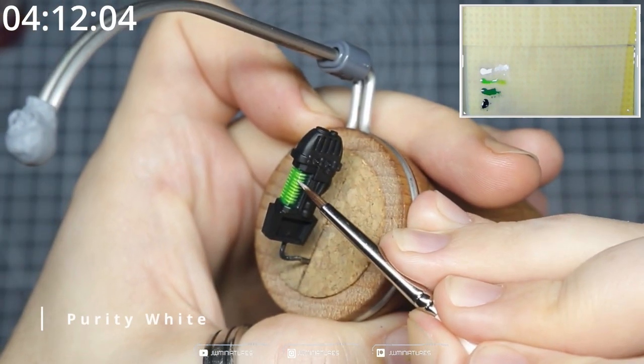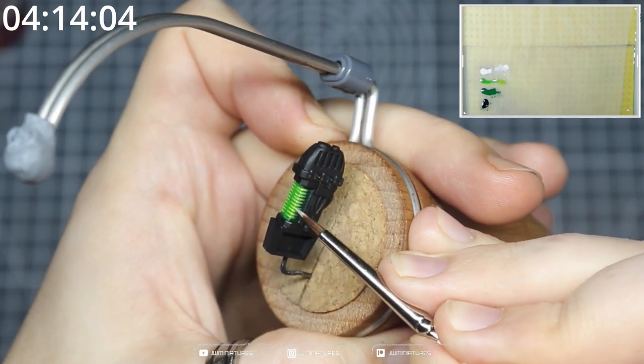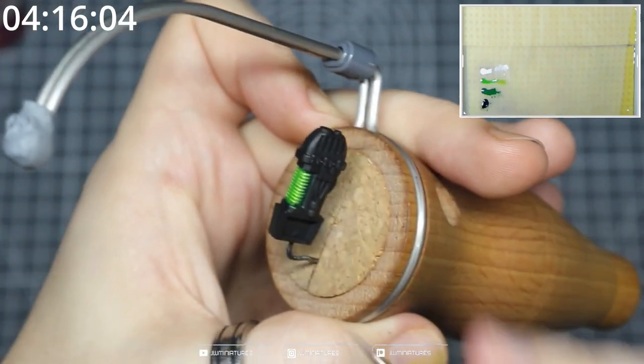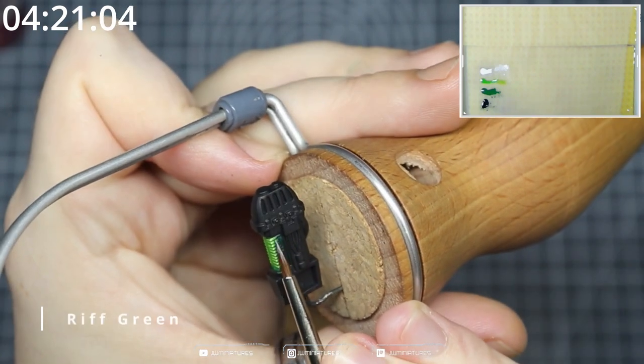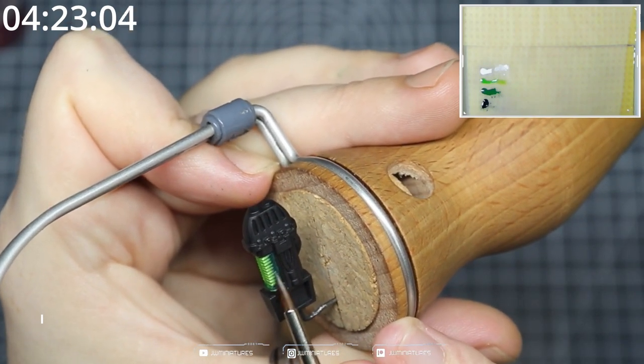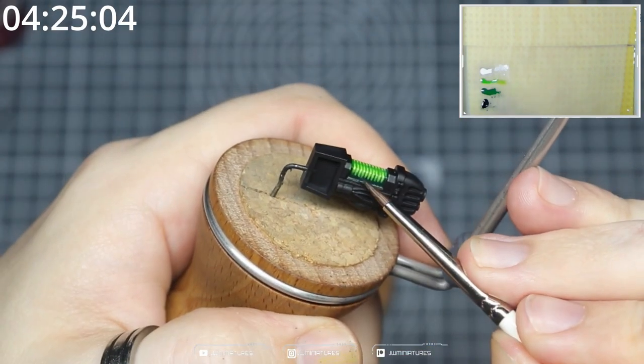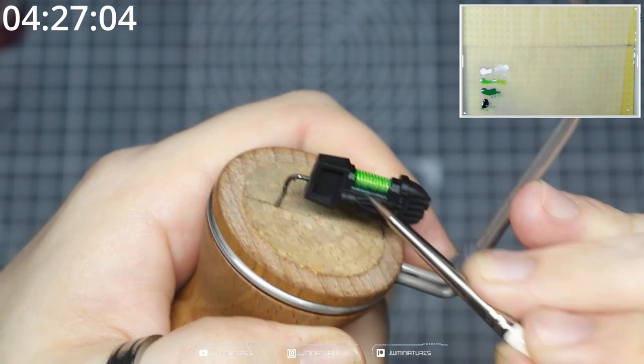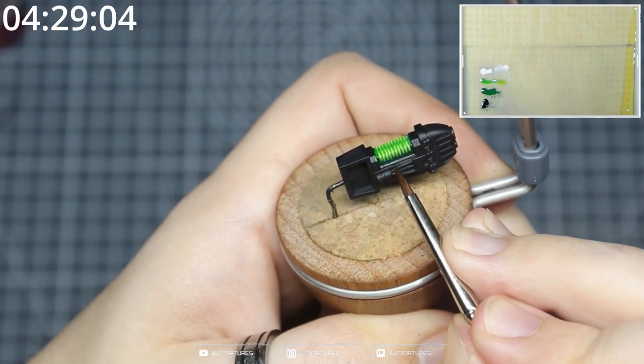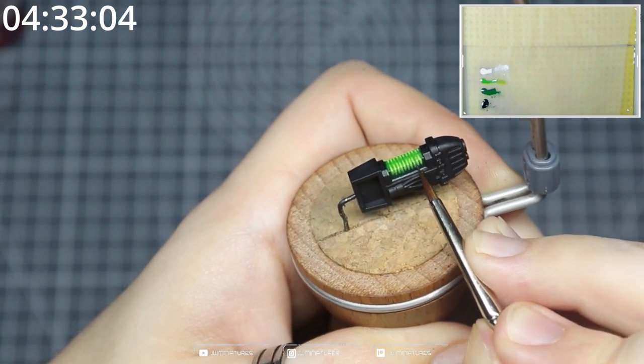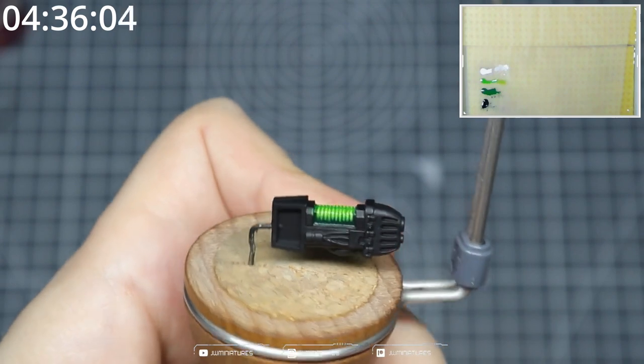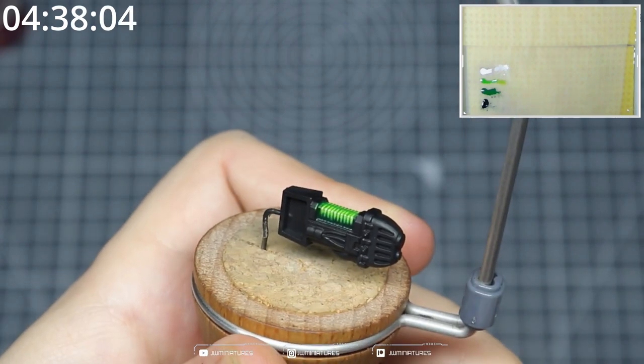So for the last highlight, we want to take some Purity White and dot that along each of the corners. Last but not least, we're just going to apply a small filter or glaze of Rift Green from the middle of the coils down towards the casing of the gun. And this is pretty similar to what Games Workshop do on their box art. A bit of refinement and you'll have something that is heavy metal style.